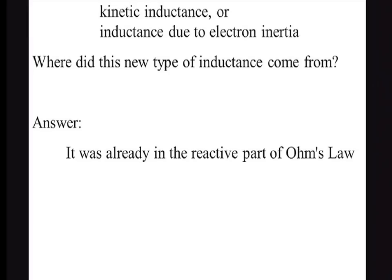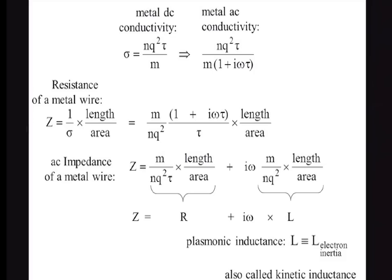Where did kinetic inductance come from? It's really part of Ohm's Law. This is the conductivity we learn about in solid state — the conductivity of a metal or a semiconductor — with 1 plus i·omega·tau in the denominator. The impedance is 1 over the conductivity times the length over area. It breaks up neatly into a real part and an imaginary part. The real part is the ordinary resistance, and the imaginary part is actually the inductance — it's i·omega times the kinetic inductance. So that's where kinetic inductance comes from, and it makes plasmonics into plasmonics. That's what's different from ordinary low-frequency electronics.